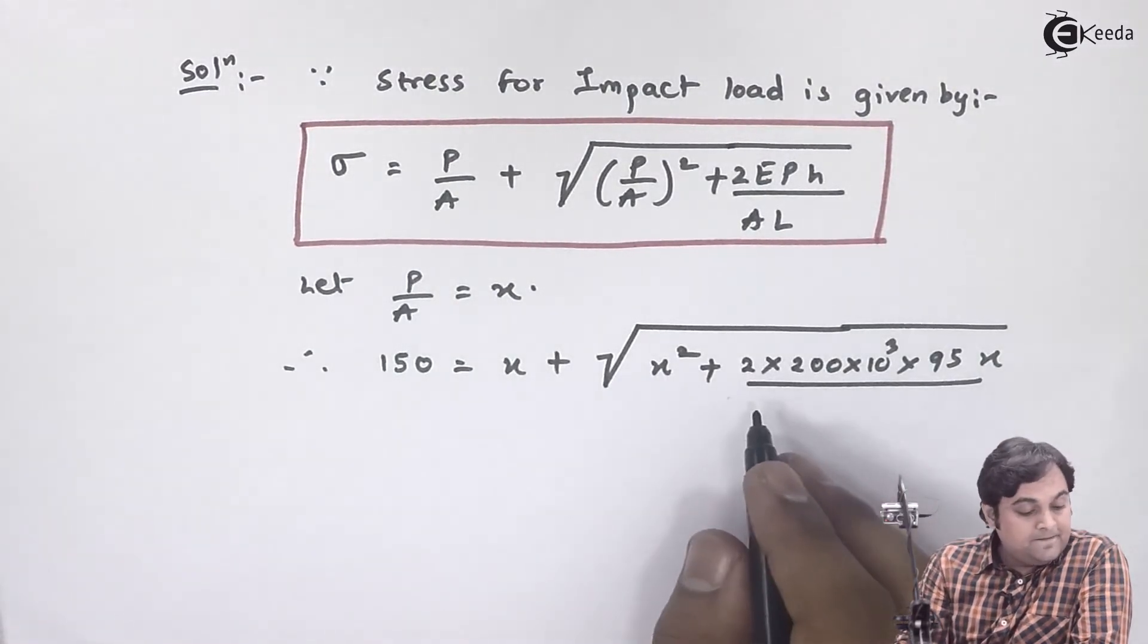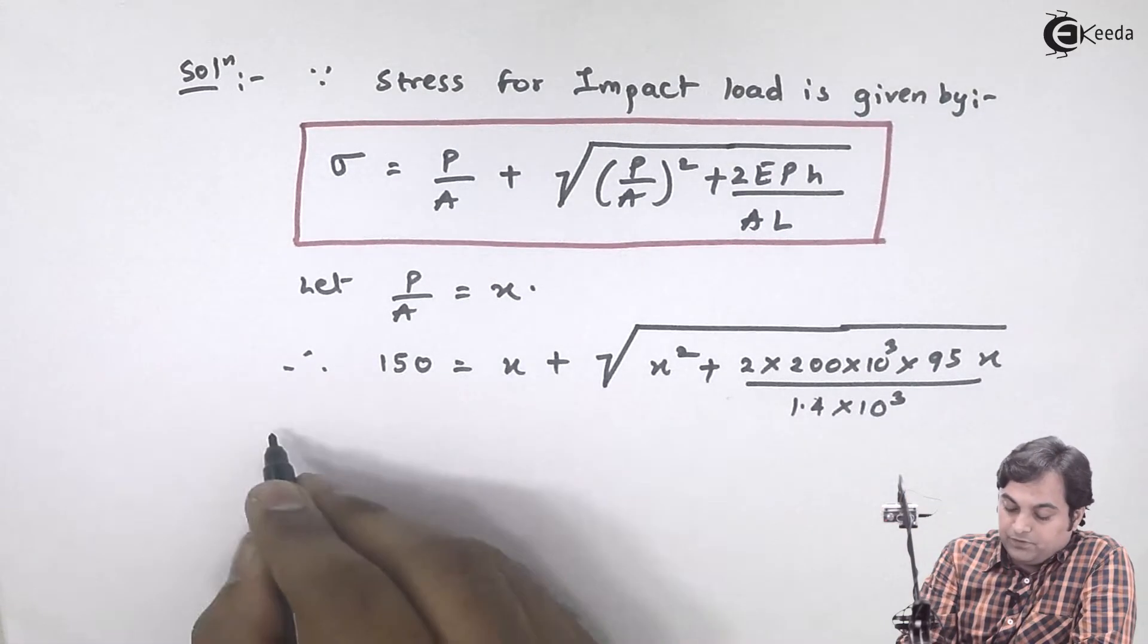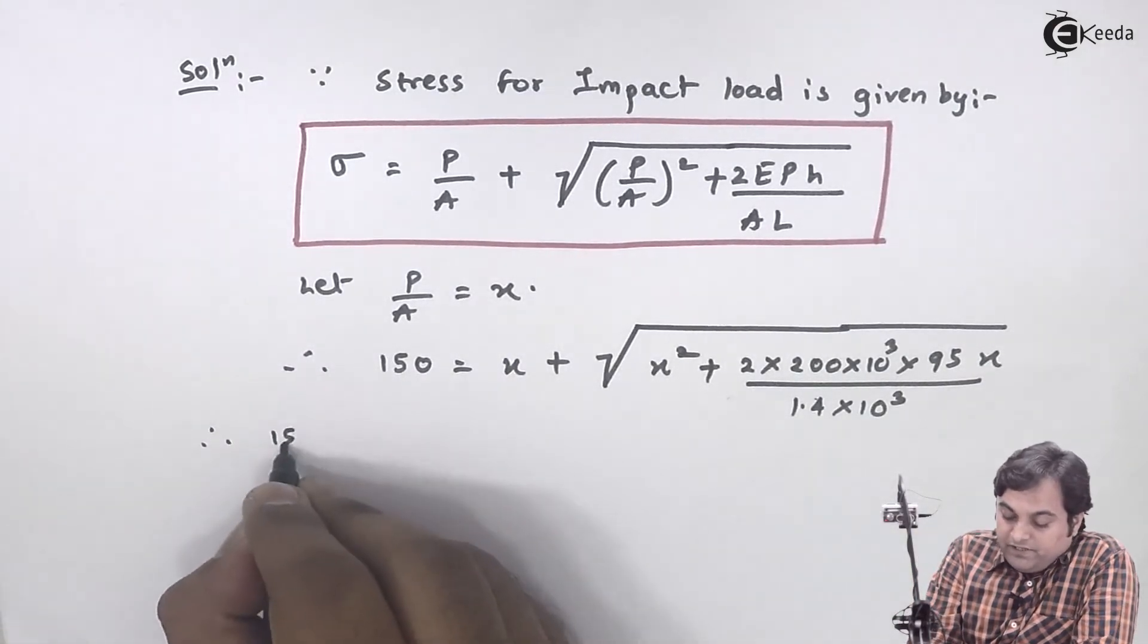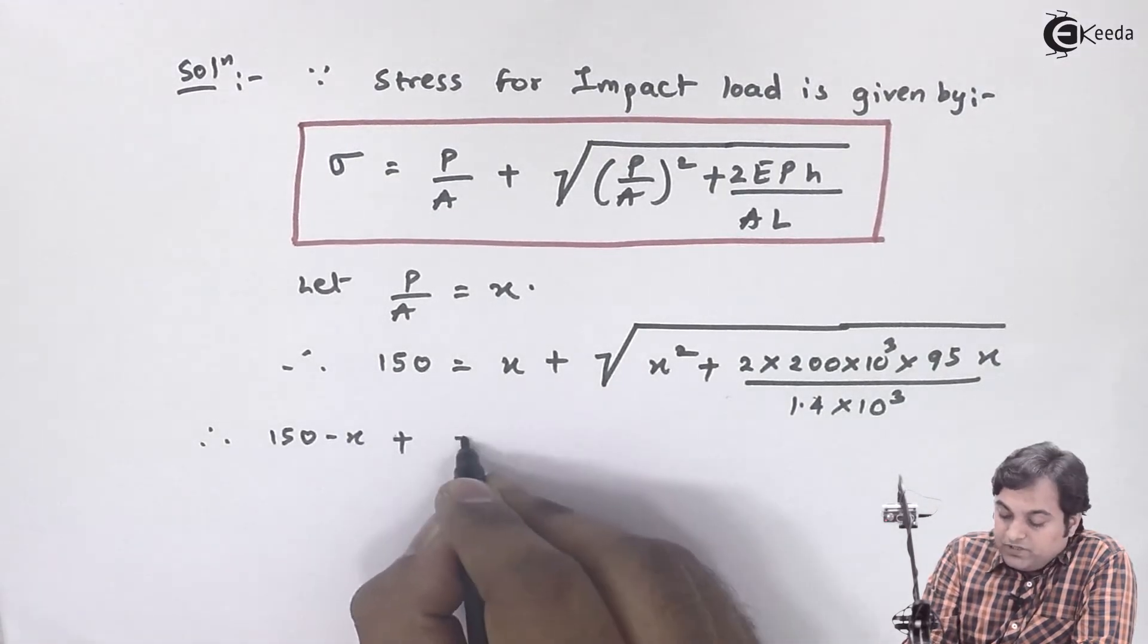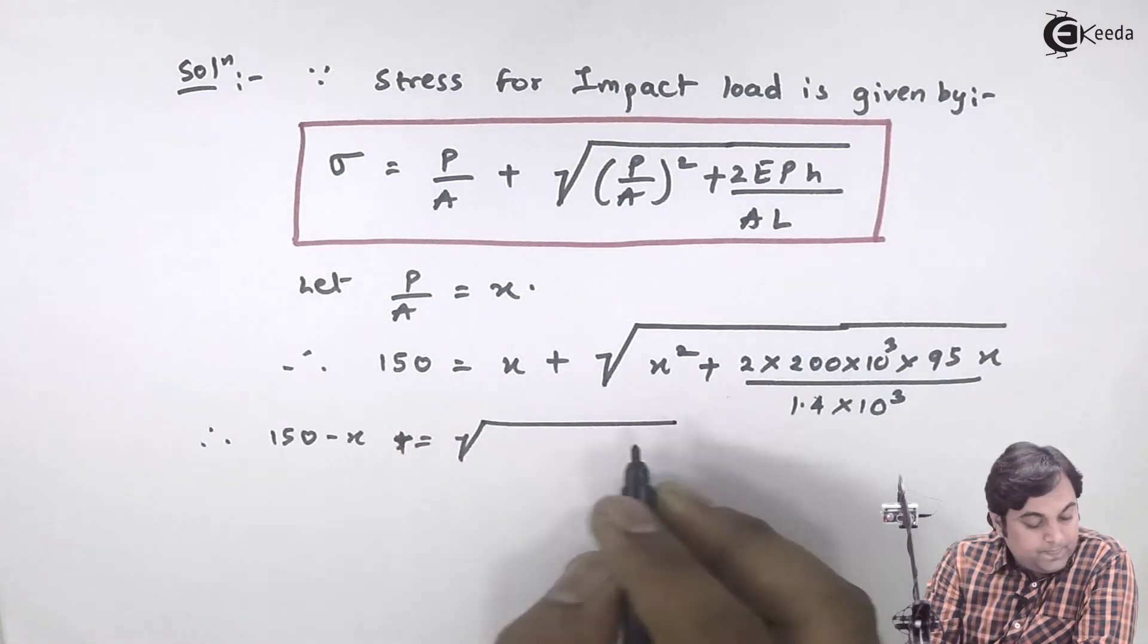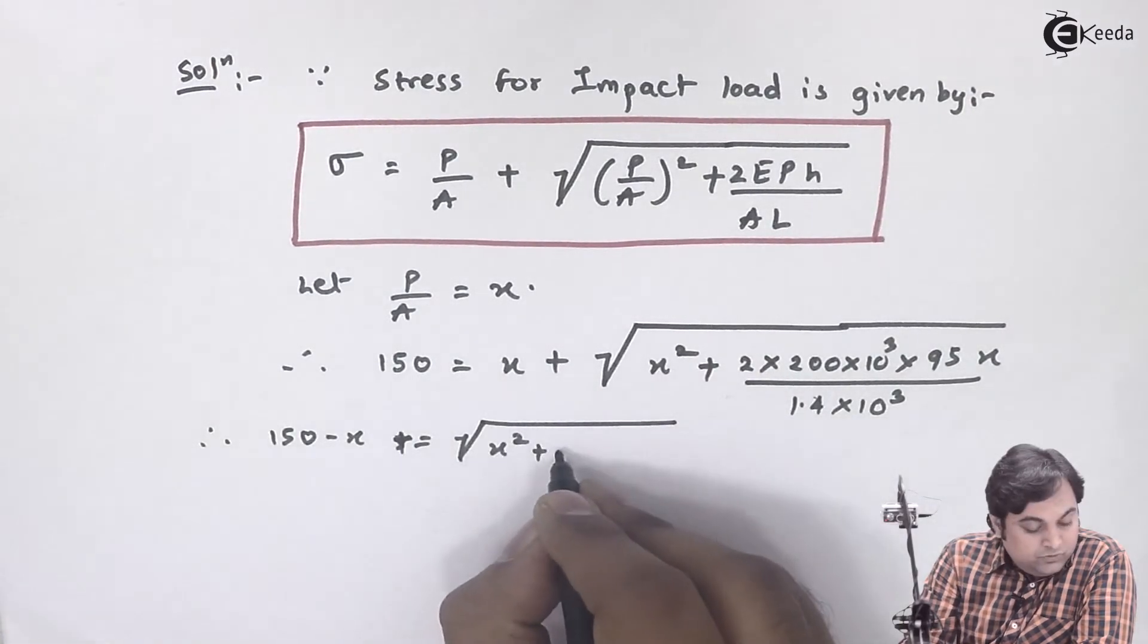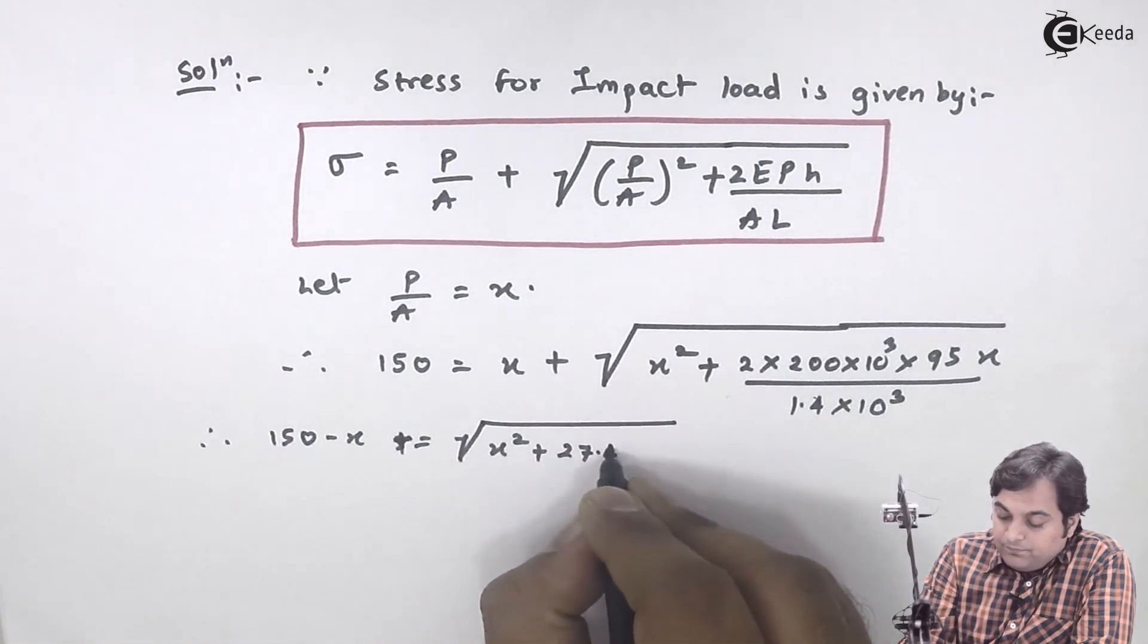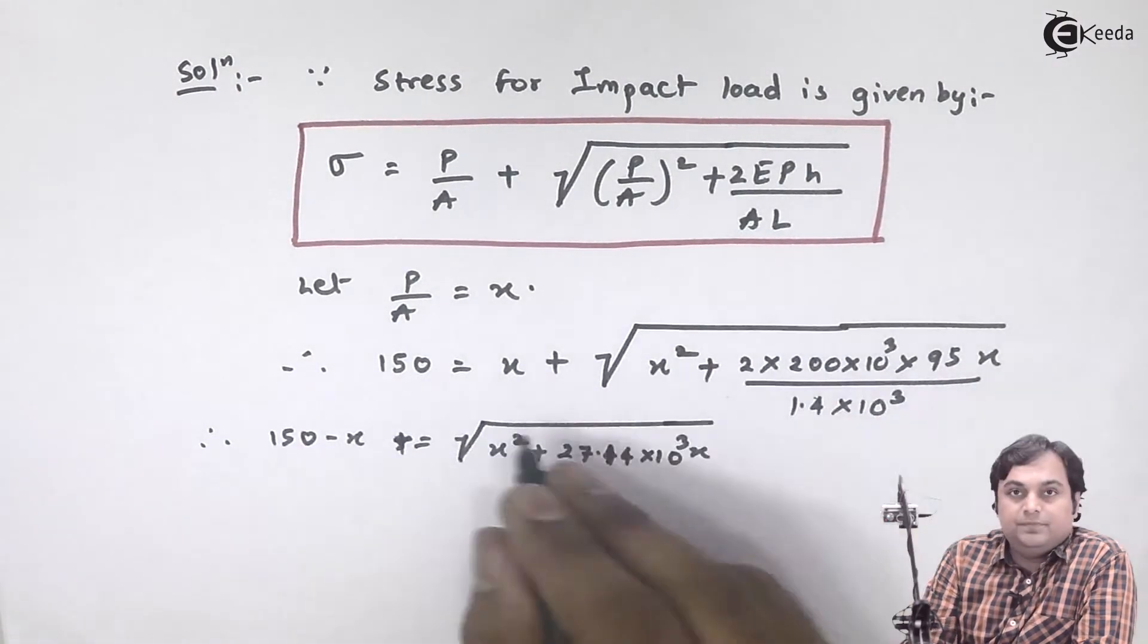The length is 1.4 meter, so it is 1.4 × 10³. Therefore, if I simplify this, I will be getting it as 150 - X = √[X² + 27.14×10³X]. That is the simplification of this